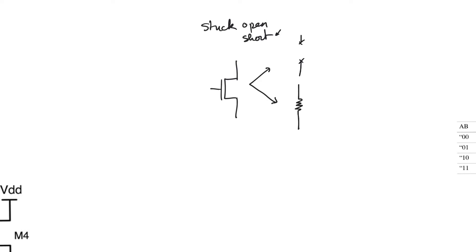A stuck short transistor is going to be always on with a small on impedance. It doesn't mean that there is a short circuit created using metal lines over the transistor, although that's a possibility. It could also mean that the transistor gate is always connected to supply or to a high voltage that turns it on, or that the threshold voltage was pushed too low by some accidental implant, so that the transistor is always on for the range of inputs that we use. This is just a model used to represent defects.